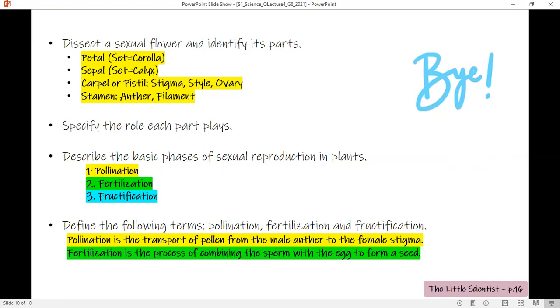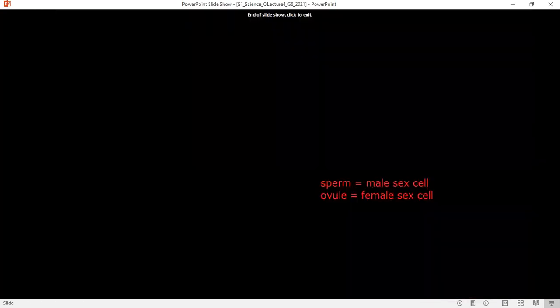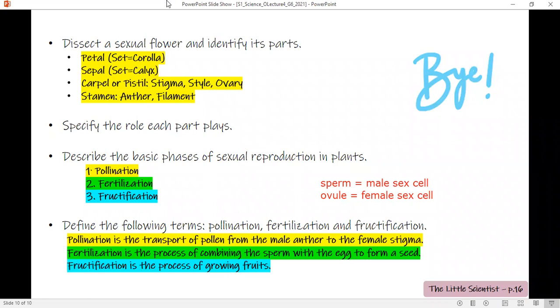The sperm is the male sex cell while the ovule is the female sex cell. When these two combine, we call the process fertilization. The last process is fructification. Fructification is the ovary turning into a fruit.